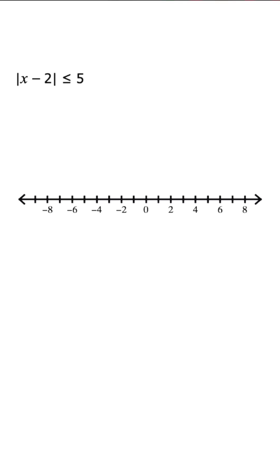They give us an absolute value inequality, and they want us to solve, graph, and include interval notation. So because we have a less than or equal to sign, this is going to be a compound and inequality. So I could rewrite this as the absolute value of x minus 2 is greater than or equal to negative 5 and less than or equal to positive 5.